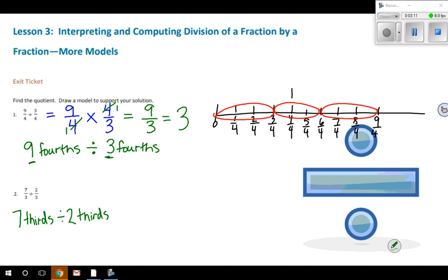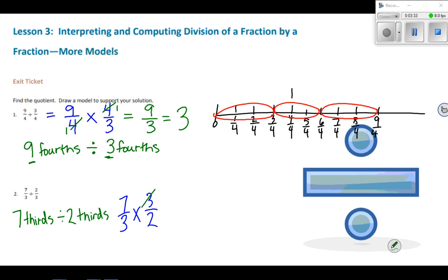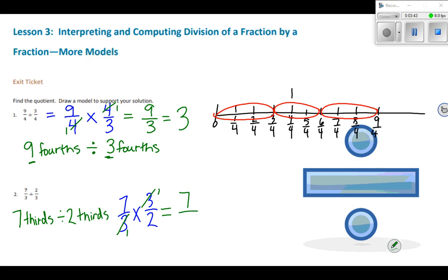So hopefully in your head, you already know the answer. And if not, I'll show again what it would look like if we rewrote it as a multiplication statement. So taking 7 thirds, instead of dividing it by 2 thirds, we can rewrite it as multiplication by multiplying it by 3 halves. And when I work that out, I can see that I have a numerator and denominator that are both 3. They can cancel each other out. 3 divided by 3 is 1. So when I work out my math problem, numerator times numerator, 7 times 1 is 7, and 1 times 2 in my denominators is 2. I'm left with 7 halves, or 7 divided by 2.